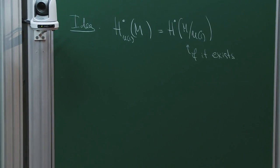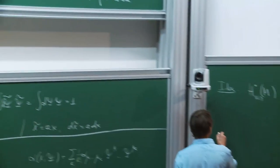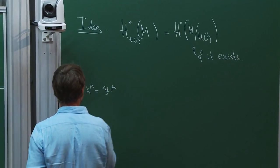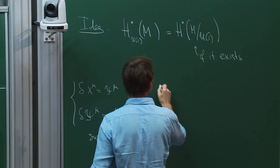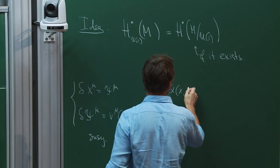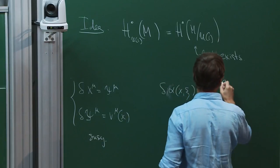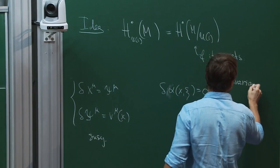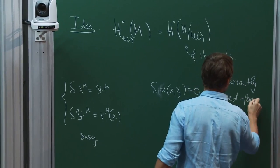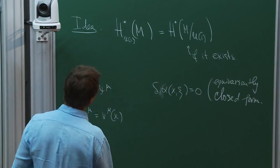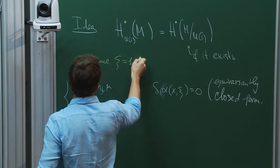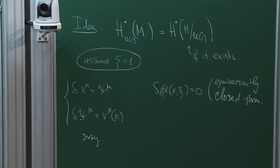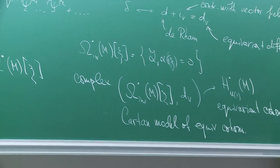So this is the setup. My supersymmetry is written in local coordinates. I have my U(1) action with corresponding vector field. I would like to study functions killed by this supersymmetry — what I call equivariantly closed forms. I will assume like physicists do and set ξ = 1, not carrying this formal parameter, though it's important for keeping track of grading.